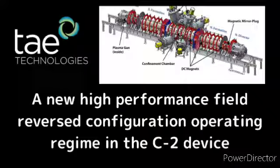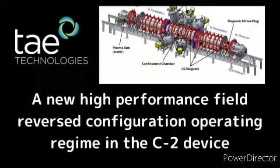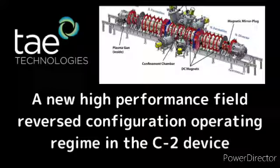A new high-performance field reversed configuration operating regime in the C2 device — Discussion. The AMBAL plasma gun produces an inward radial electric field in the FRC layer (figure 3), and a good electrical connection through the entire C2 device (figure 4). As a result, the growth of the N=0 rotational mode can be prevented without quadrupole magnetic fields (figure 5).